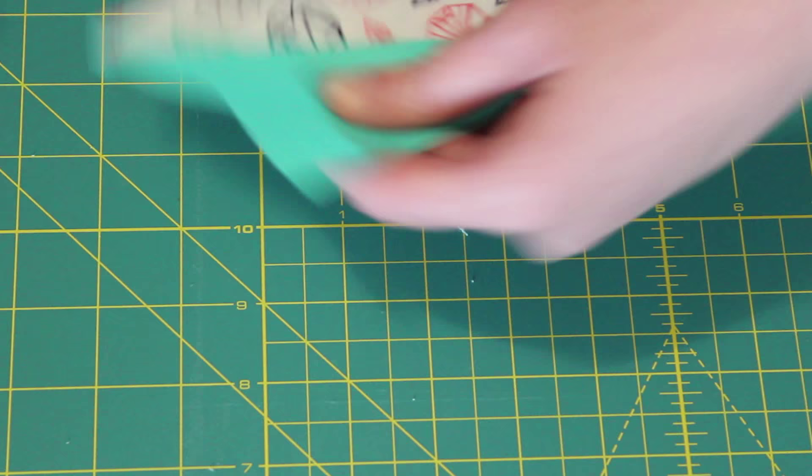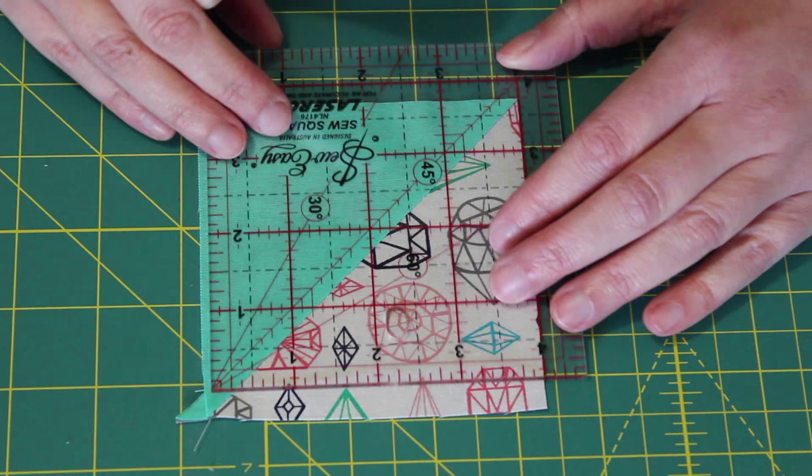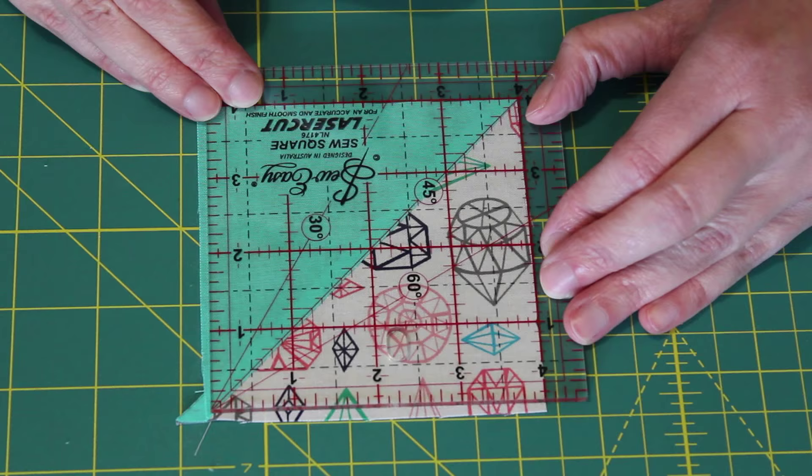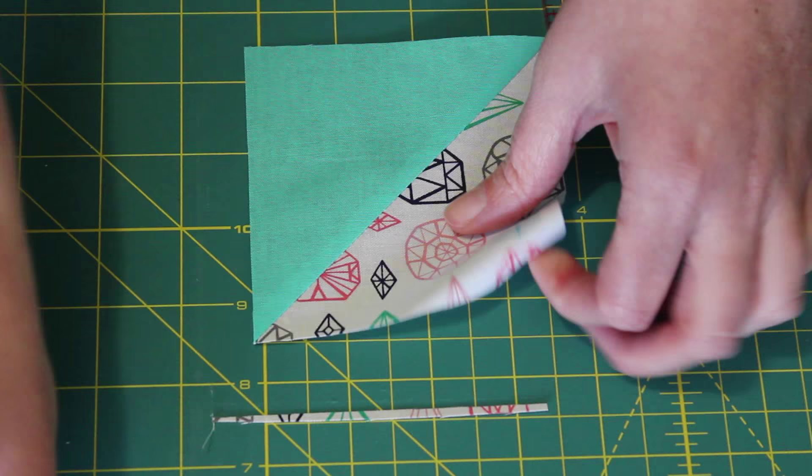Then spin the block around, lining up the 45 degree line with the centre seam and the 4 inch measurement lines along the left and bottom edges. Trim off the excess fabric and repeat the same steps to square up the other three half square triangle units.